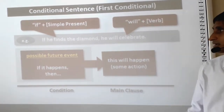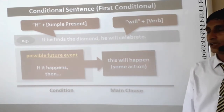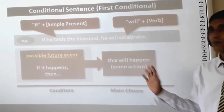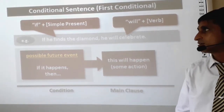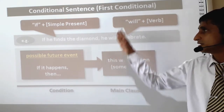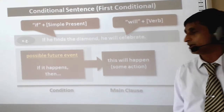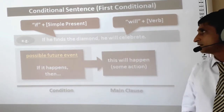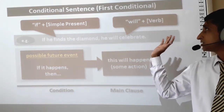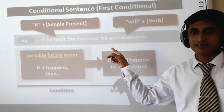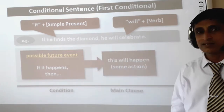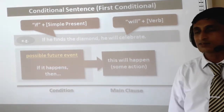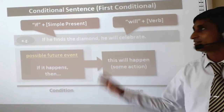Let's understand this with an example. There are two parts in the conditional clause: condition and main clause. The example starts with if he finds the diamond — simple present tense — the result will be he will celebrate. If he finds the diamond, the result will be he will celebrate.